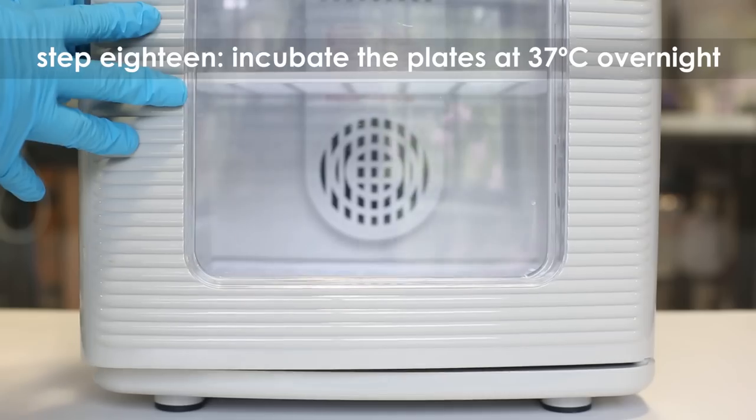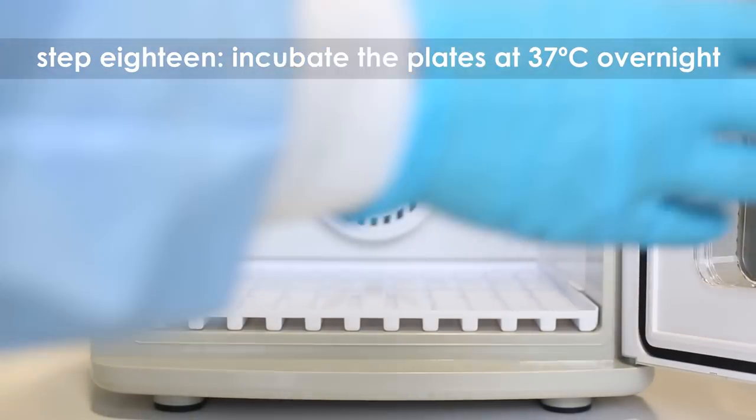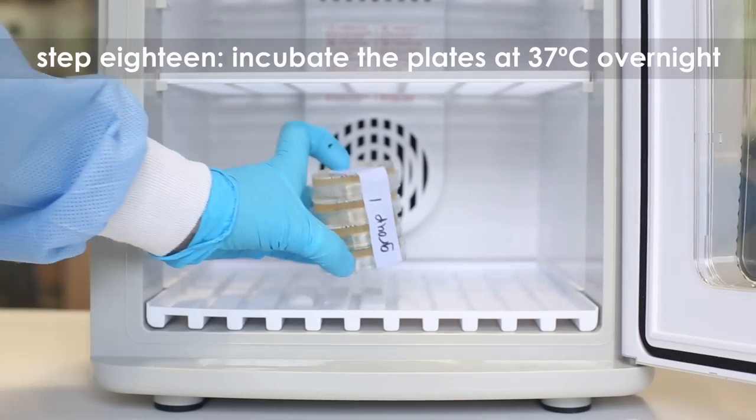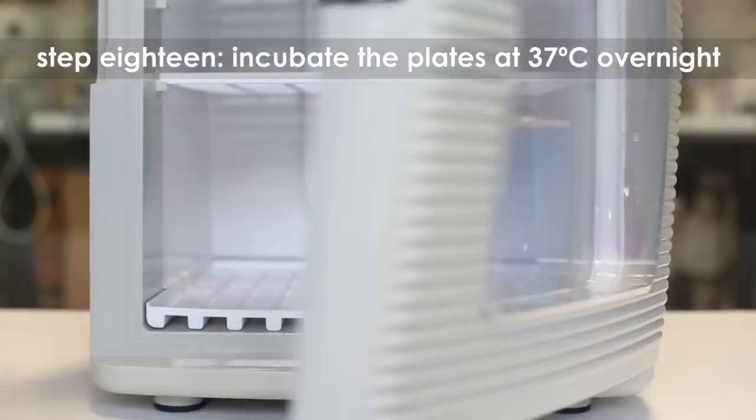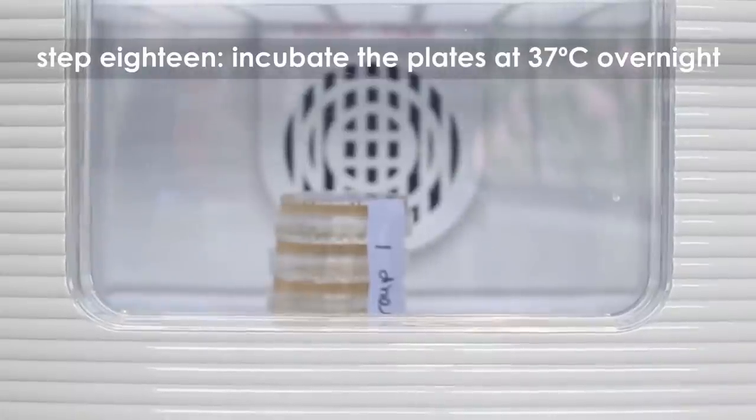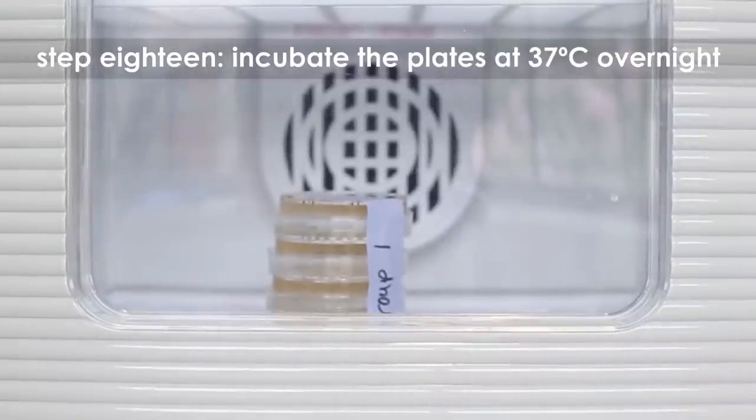Step eighteen: make sure the liquid has completely dried before inverting the plates with the agar side on top. Place the plates in a 37 degrees Celsius incubator overnight.